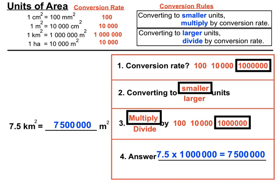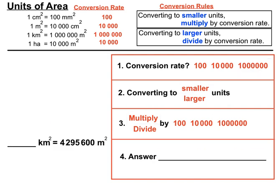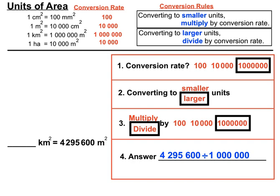With square units, numbers get very big very quickly. Converting kilometres squared and metres squared again using the million conversion rate, but this time converting to larger units — from metres squared to kilometres squared — we divide by a million, moving the decimal point six places to the left. The answer is 4.2956 km², which is about 4.2 million square metres.